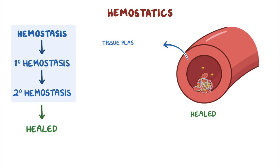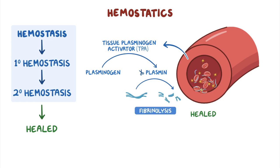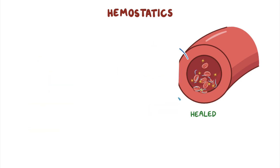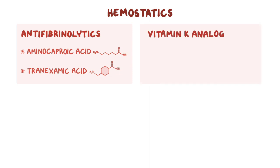When the tissue is healed, the endothelial cells produce an enzyme called tissue plasminogen activator, or tPA, which converts plasminogen into its active form, plasmin. Plasmin acts as a protease by cutting fibrin into smaller pieces — a process called fibrinolysis — ultimately dissolving the clot. The most commonly used hemostatics include anti-fibrinolytics such as aminocaproic acid and tranexamic acid, and vitamin K analogs like phytonadione.